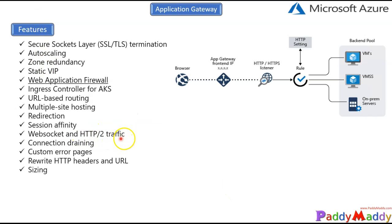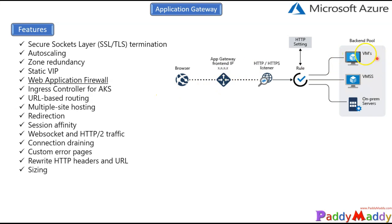Application Gateway also supports WebSocket and HTTP/2 traffic. This is traditional support for ports 80 and 443 — HTTP and HTTPS. You can reuse the same TCP connection for multiple requests and responses, resulting in more efficient utilization. WebSocket and HTTP/2 allow full-duplex communication between servers and clients, which is very useful for more interactive communication between web servers and clients.